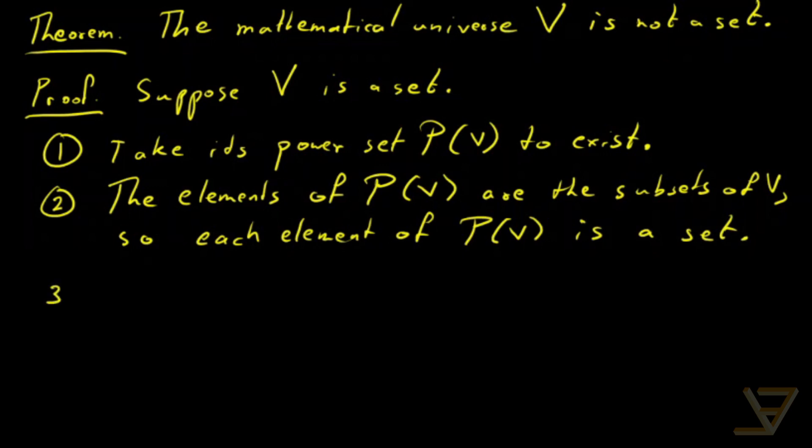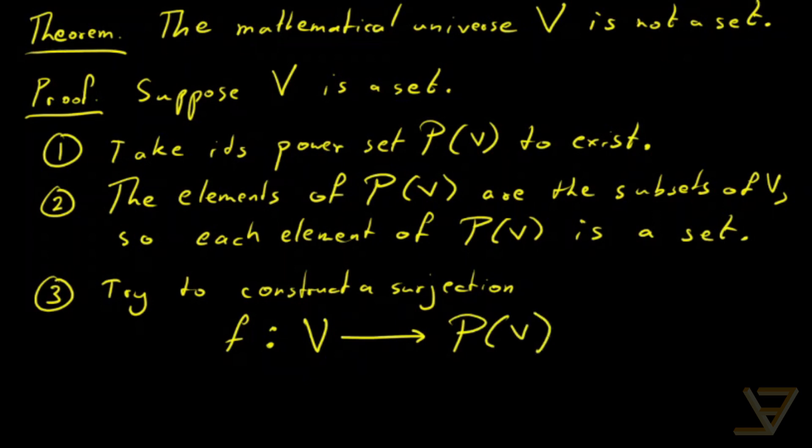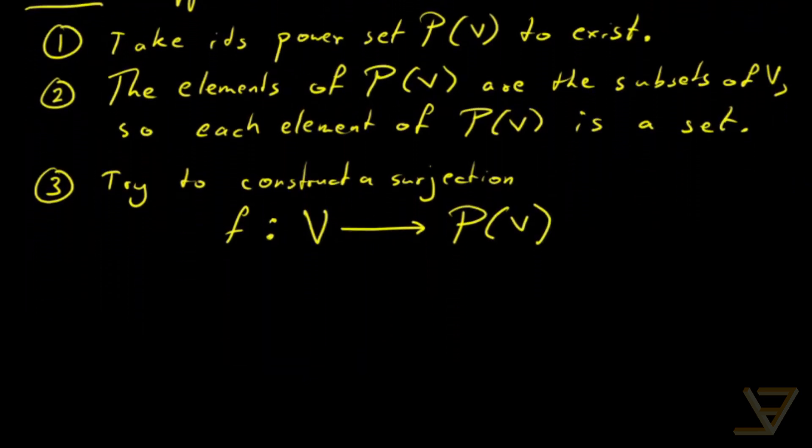So what we're going to do is we're going to try to construct a surjection that's going to be the function f from the mathematical universe, which we have assumed to be a set, to its power set P(V). And here's how we're going to define it.